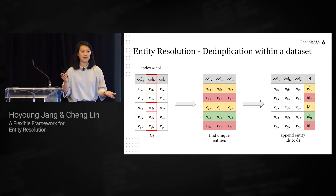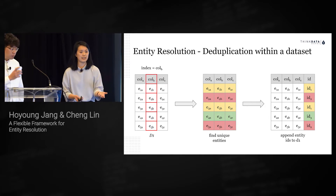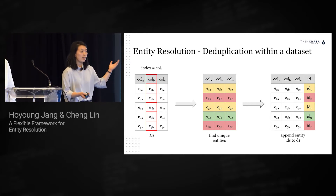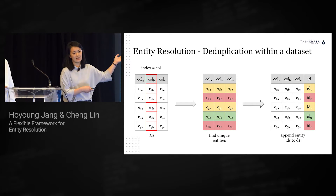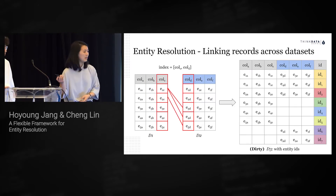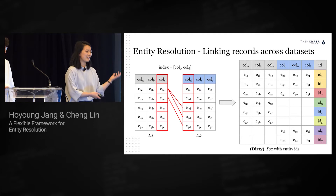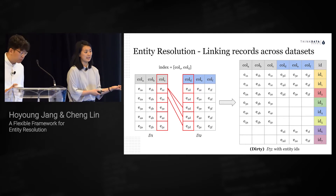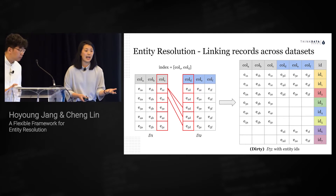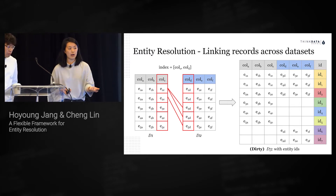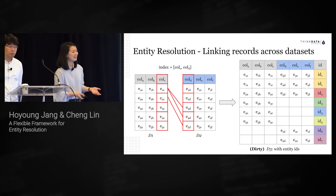We pass back this final table to the user for them to decide what to do with it. If they want to clean their data to have only unique entities, they can simply select the unique IDs. Once we can find duplicates across one data set, we can extend this to multiple data sets and achieve intelligent linking across data sets.